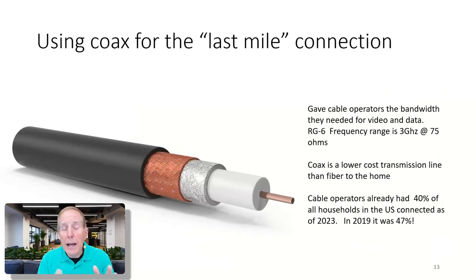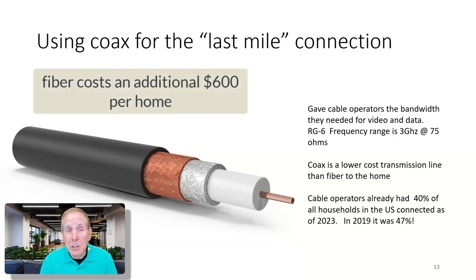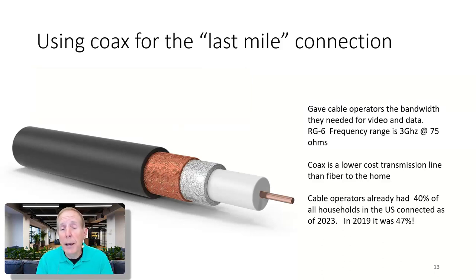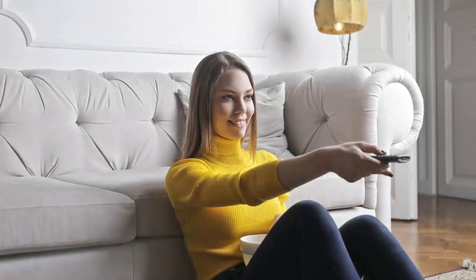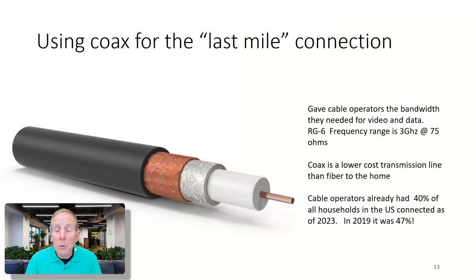So why coax for the last mile connection? Why didn't they decide to move to fiber only? Well, number one, it's cheaper by a long shot. Coax gives cable operators the bandwidth they need to deliver both video and data up to 3 GHz at 75 ohms. Cable operators already had about 40% of all households connected by 2023. By the way, in 2019 it was over 47%, so they've lost a little bit to telcos bringing fiber.